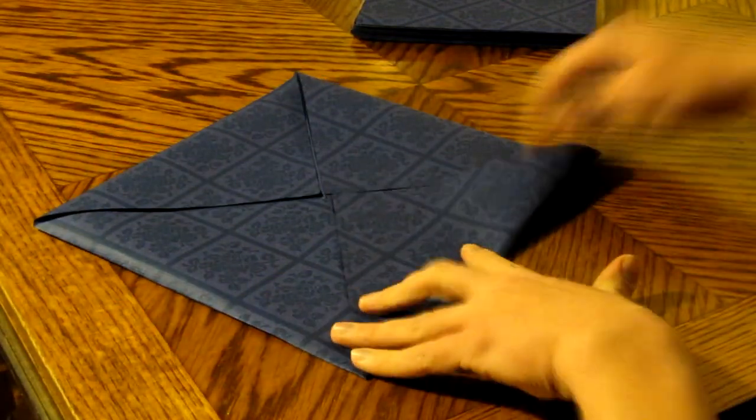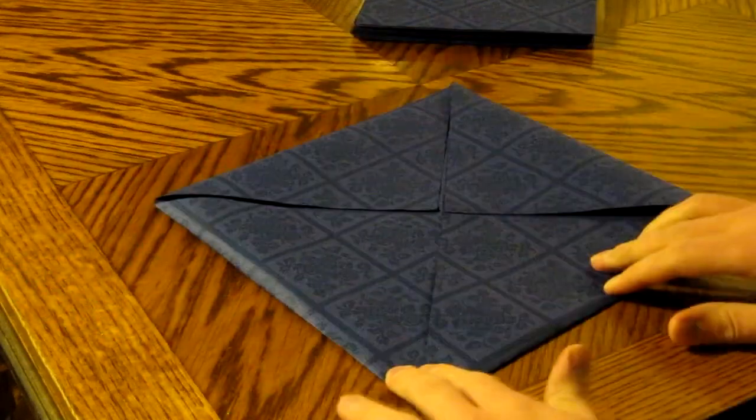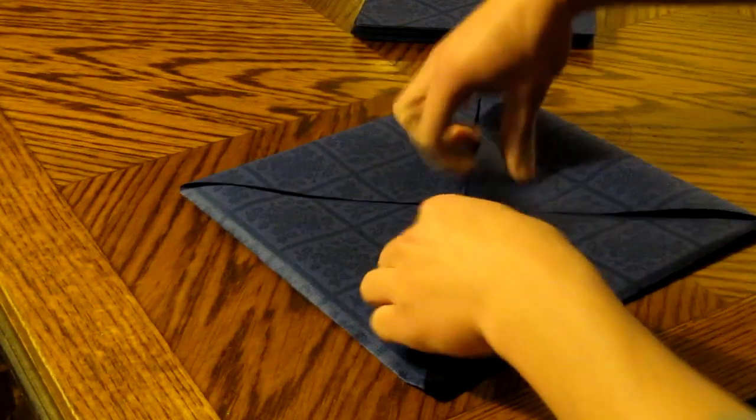After all corners have been folded, make sure that the polish is upwards. I'm taking one of the four sides and folding this one towards the middle.